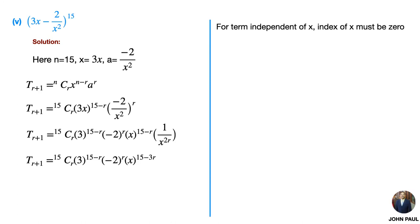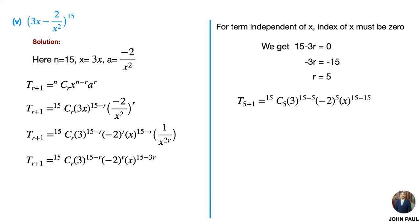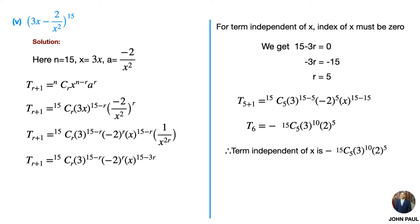We get 15Cr · 3^(15−r) · (−2)^r · x^(15−3r). For the term independent of x, the index of x must be 0, that is 15 − 3r = 0. By simplification r = 5. Substituting r = 5: since 5 is an odd number the minus sign remains, giving T6 = −15C5 · 3¹⁰ · 2⁵. Therefore the term independent of x is −15C5 · 3¹⁰ · 2⁵.